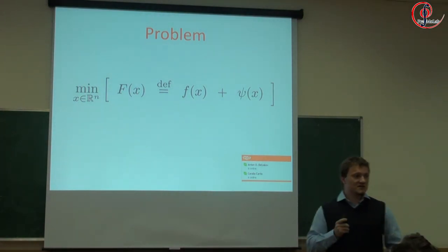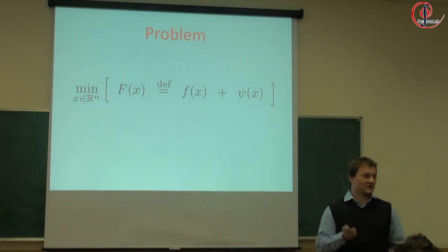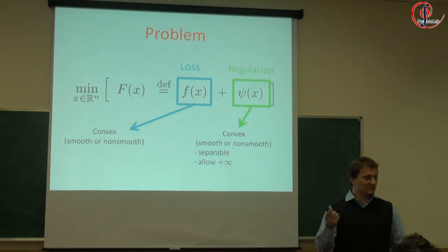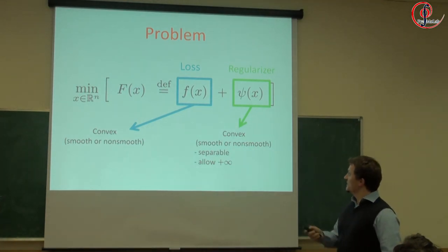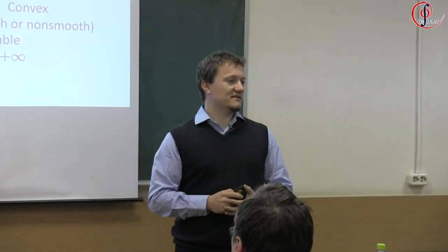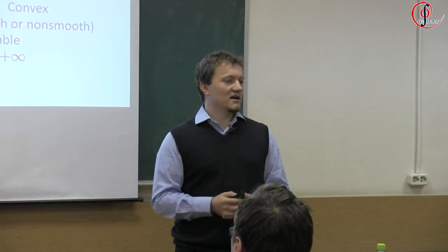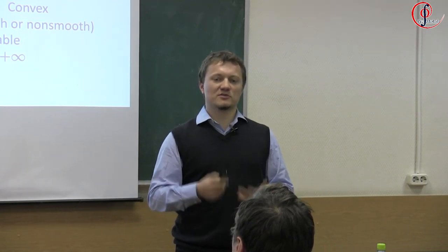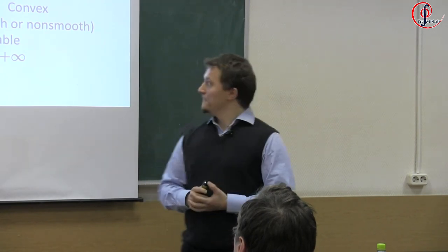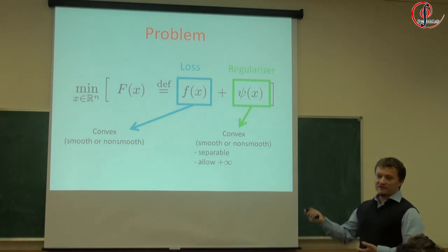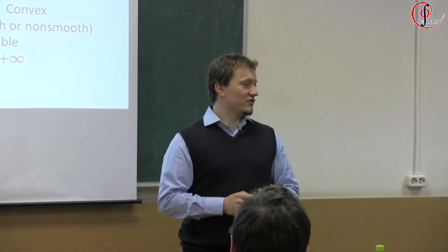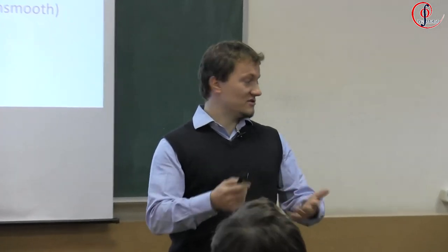Minimize the sum of two functions: a smooth function and a non-smooth regularizer. Both of these things are convex. You can think of this as a loss function if you're a machine learning specialist. We allow the regularizer to have the value of plus infinity, which means you can model constraints this way, but we assume it's separable — so only separable constraints, and maybe block separable constraints. This can be smooth or non-smooth. If it's non-smooth, the algorithm I will talk about is applied to the smooth version of it, using Nesterov smoothing, for instance.